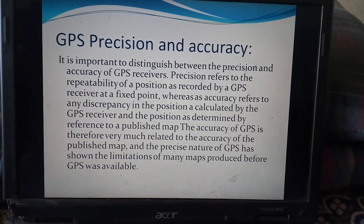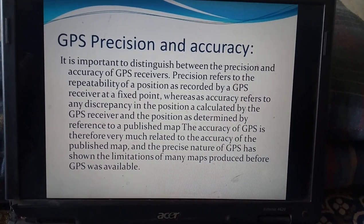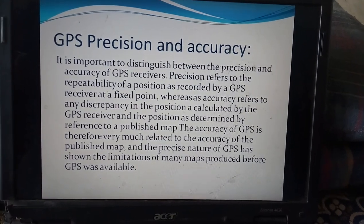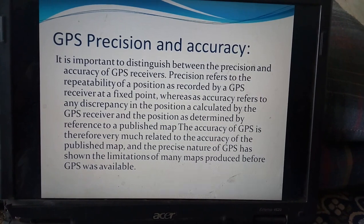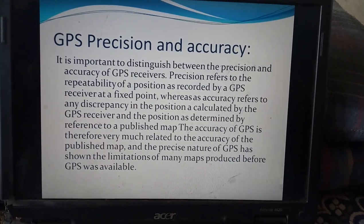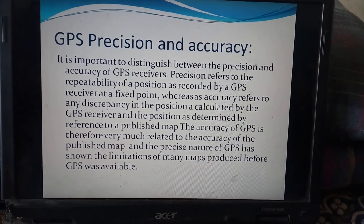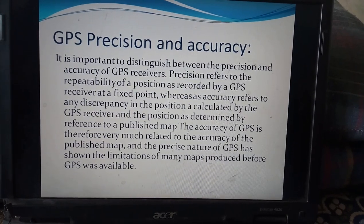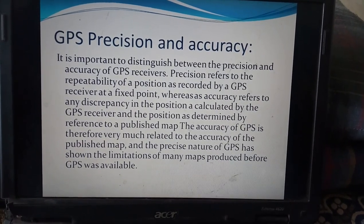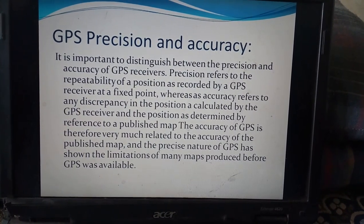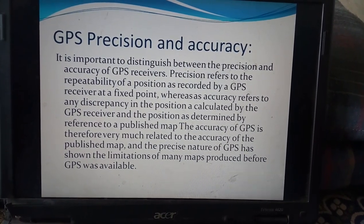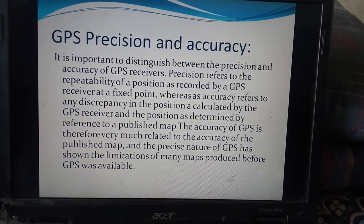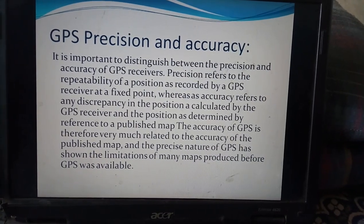Coming to GPS precision and accuracy: it is important to distinguish between the precision and accuracy of GPS receivers. Precision refers to the repeatability of the position recorded by the GPS receiver at a fixed point, whereas accuracy refers to any discrepancy between the position calculated by the GPS receiver and the position determined by reference to a published map. The accuracy of GPS is therefore closely related to the accuracy of published maps, and the precise nature of GPS has revealed the limitations of many maps produced before GPS was available.